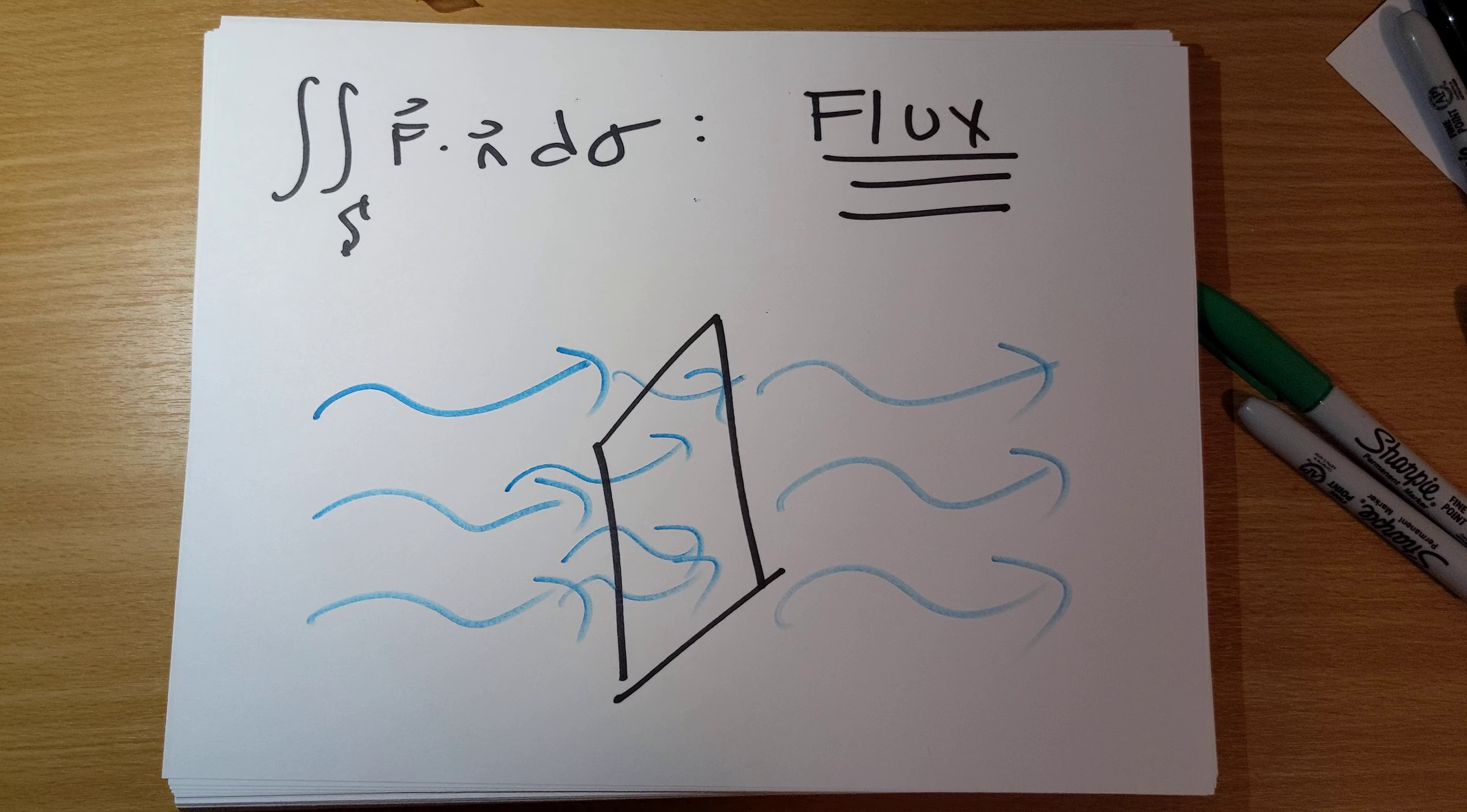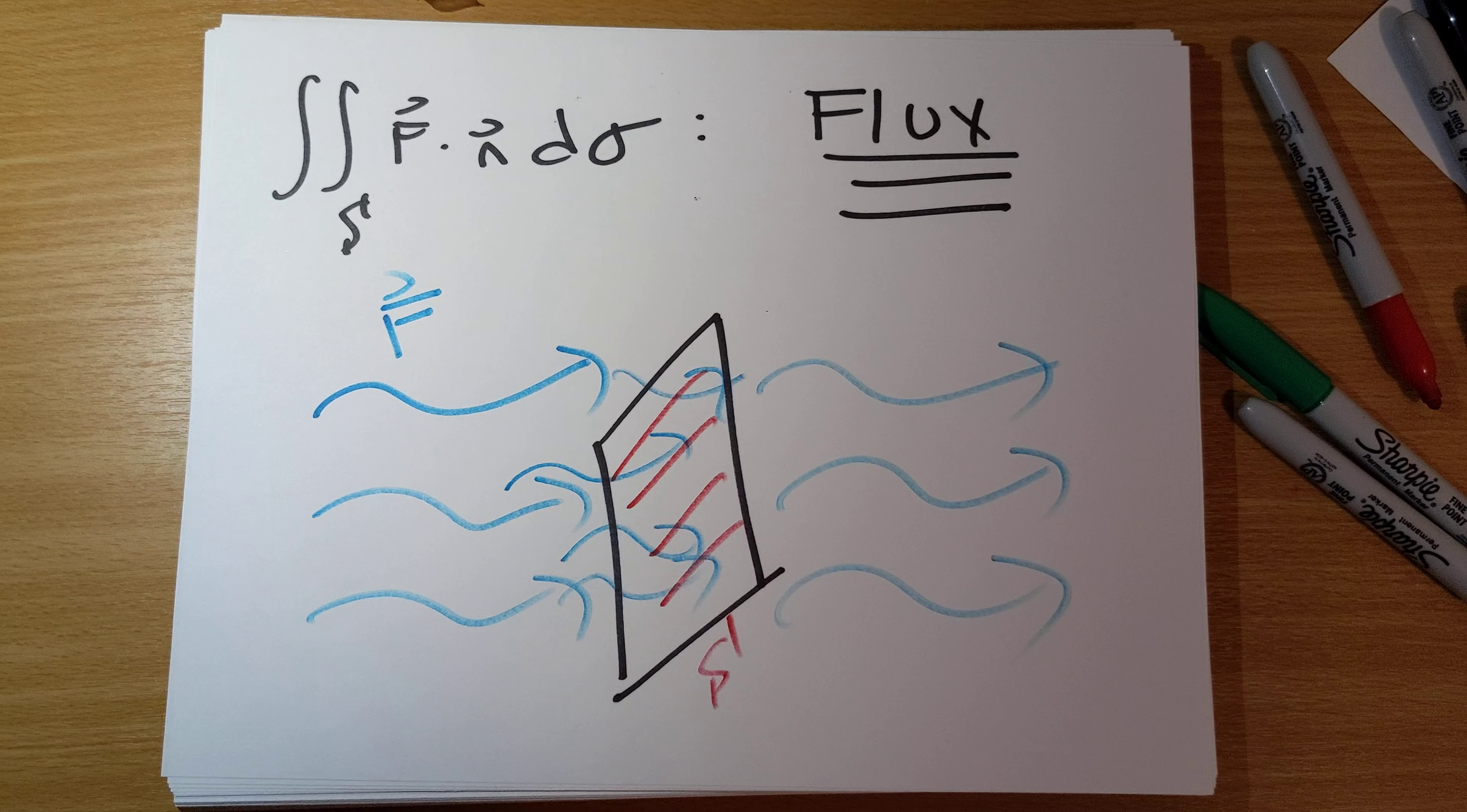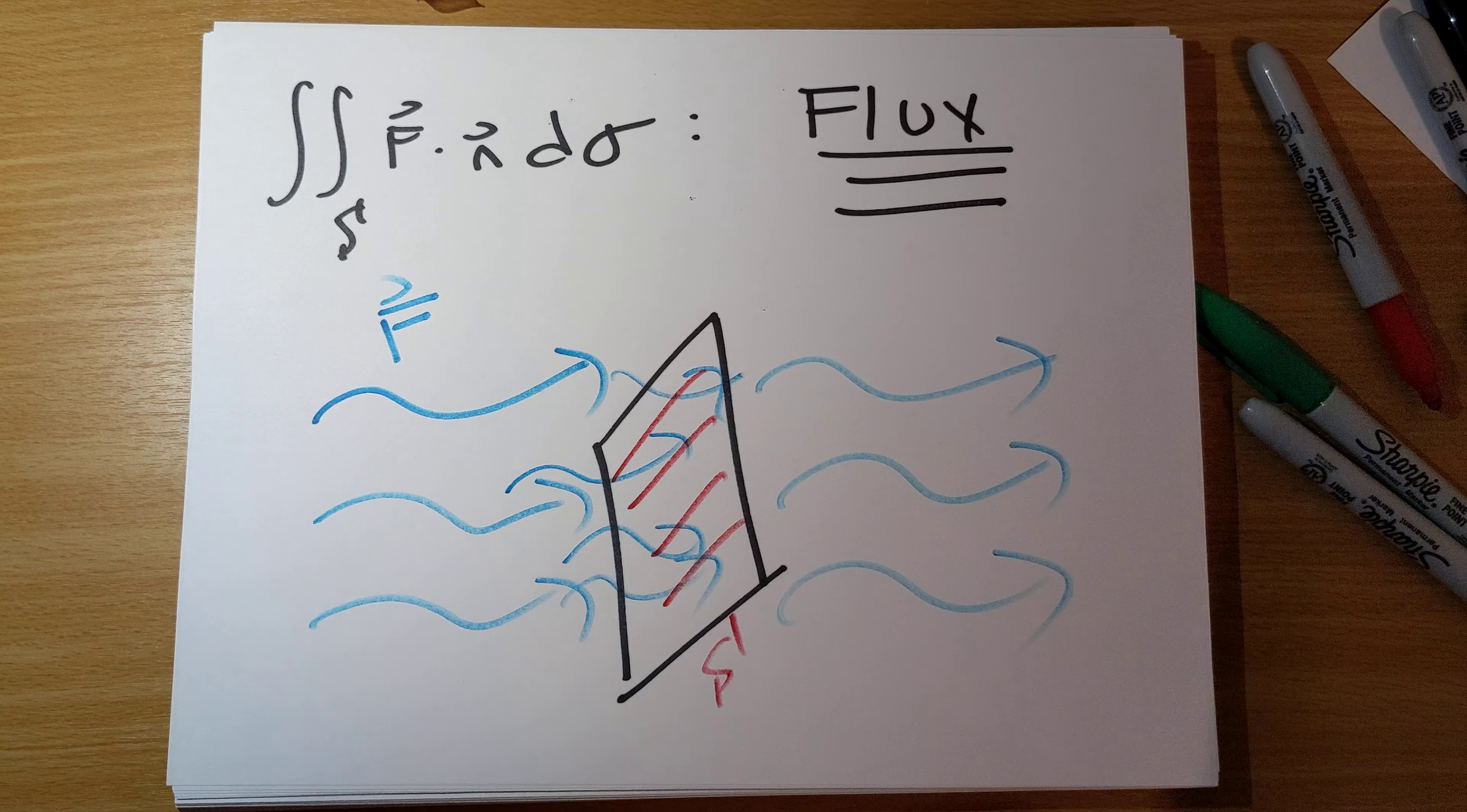Question is, if I have a vector field F that's corresponding to water flow through my surface S here, how much water is flowing through this surface? That's the flux, and that's what this flux integral is capturing. When we're doing this kind of calculation, this is the kind of idea that we are encapsulating.